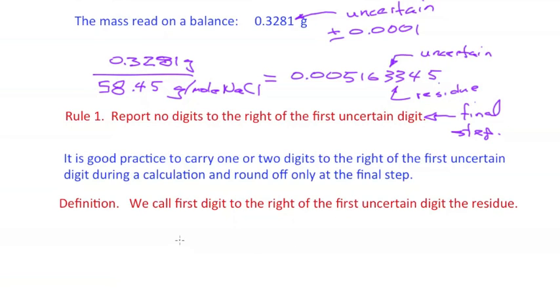So when I calculate something with this term as an intermediate quantity, if I need to transfer that to somewhere else, I put the residue and perhaps another digit below the line to remind me that the 3 next to the 6 is our first uncertain digit.